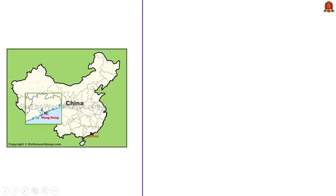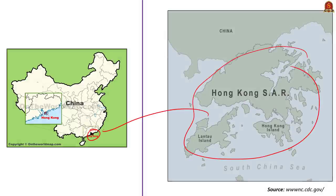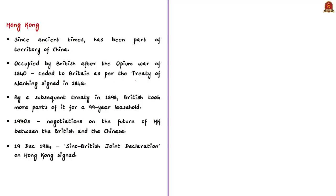The preamble of the Basic Law on Hong Kong states that since ancient times Hong Kong has been part of the territory of China, but Hong Kong was occupied by Britain after the Opium War of 1840 and was ceded to Britain as per the Treaty of Nanking signed in 1842. There was another treaty in 1898, which gave more parts to Britain in Hong Kong for a 99-year leasehold to the British government, to end by the last date of June 1997.